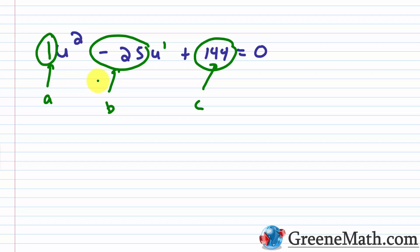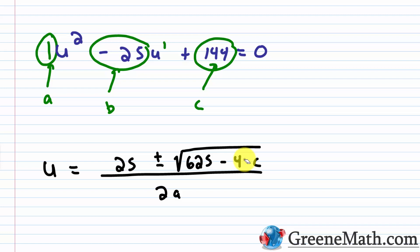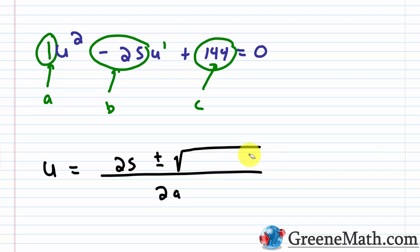Using the quadratic formula, u equals negative b plus or minus the square root of b squared minus 4ac, all over 2a. The negative of b is the negative of -25, which is 25. b squared is (-25)² = 625. Then minus 4 times 1 times 144, which is 576. So 625 minus 576 equals 49, and the square root of 49 is 7. The denominator is 2 times 1, which is 2.